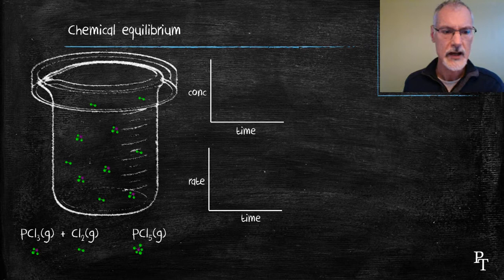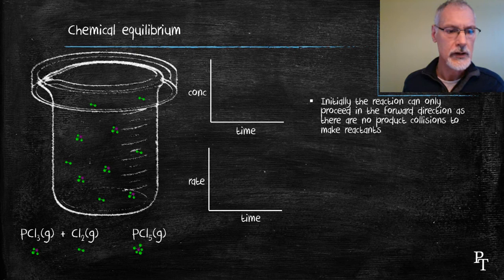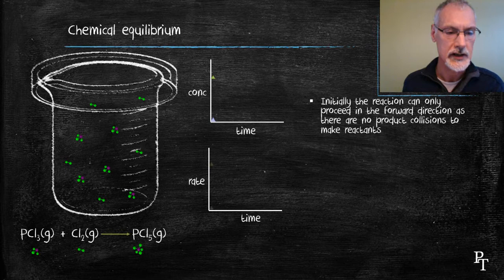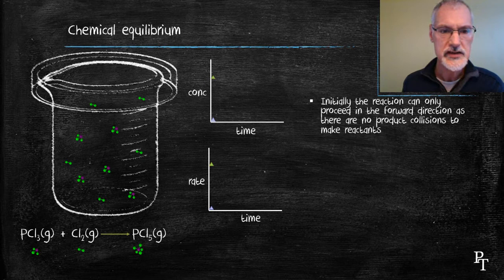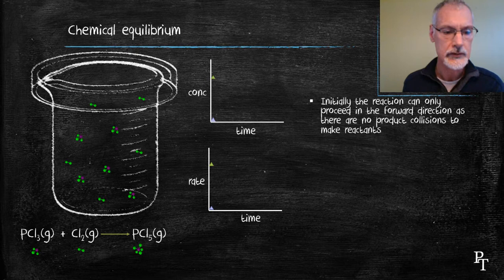Now, initially when I start, I have only the reactant molecules. So I'm showing this on a concentration graph. The green indicates my reactant and the purple my product. I'm also plotting a graph of the rate of the reaction versus time. The green representing the forward reaction and the purple the reverse reaction. Initially this reaction can only proceed in the forward direction. As I only have reactant molecules, there aren't any products. This is shown then by that one-way arrow.